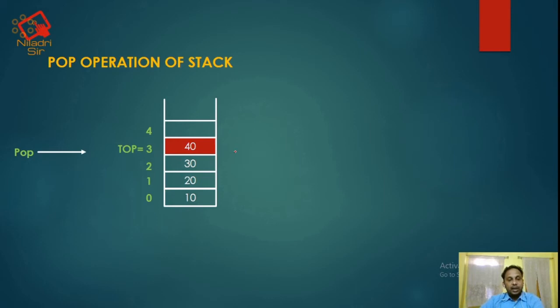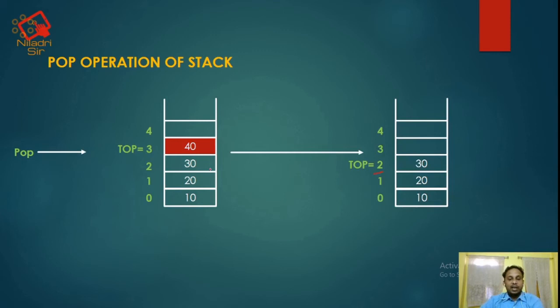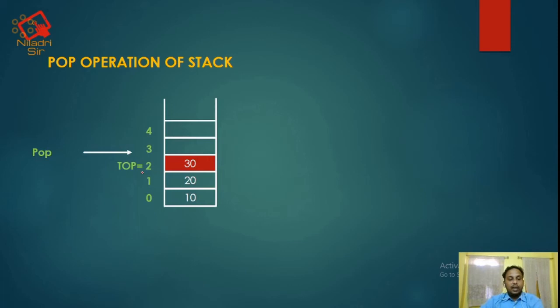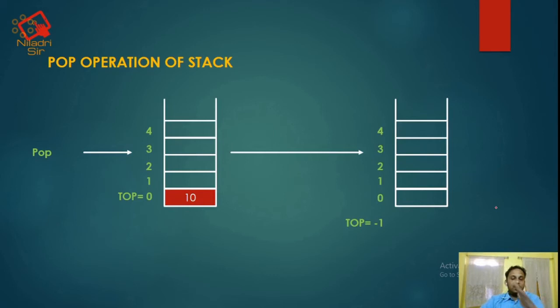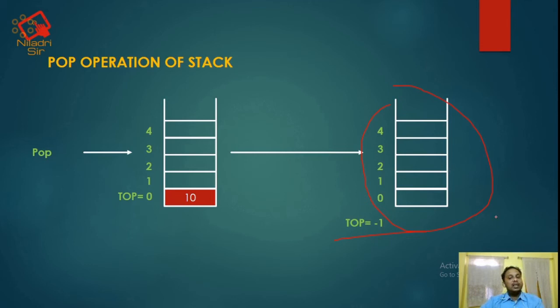We will again perform the POP operation. Top is at position 3, the value is 40, so we will delete 40. The value of top will now be at 2 — that is top minus 1. Again, we perform POP operation; top is at position 2, so top becomes 1. After that, if we again perform POP, then the top will be at minus 1 position. There is no element, the stack is empty now, and this is the underflow condition. We cannot perform POP operation because there is no element to delete.